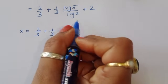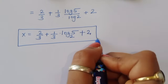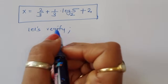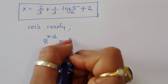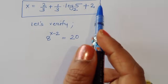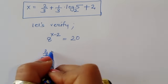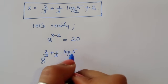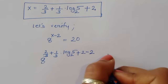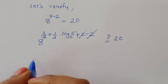So the value of x is 2 upon 3 plus 1 upon 3 times log of 5 to the base 2 plus 2. Now let's verify this is correct. We substitute this value into 8 power x minus 2 equals 20. Since x contains plus 2 and we subtract 2, those cancel, leaving 8 power 2 upon 3 plus 1 upon 3 times log of 5 to the base 2.